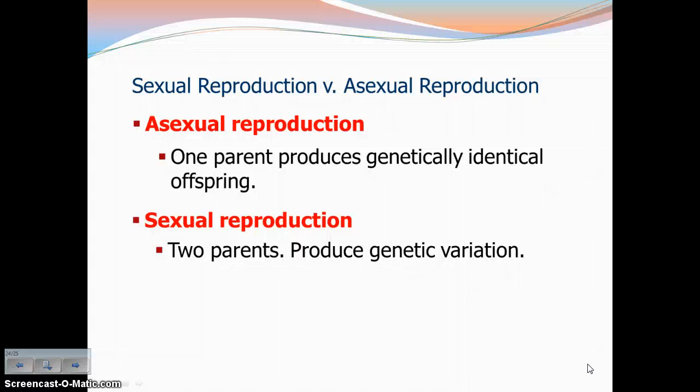In asexual reproduction, you have one parent producing offspring that are genetically identical. In sexual reproduction, you have two parents producing genetic variation. And genetic variation is a good thing — both asexual and sexual reproduction have benefits, but in humans we definitely want sexual reproduction. This is why we look different from one another. This is why we're all different.